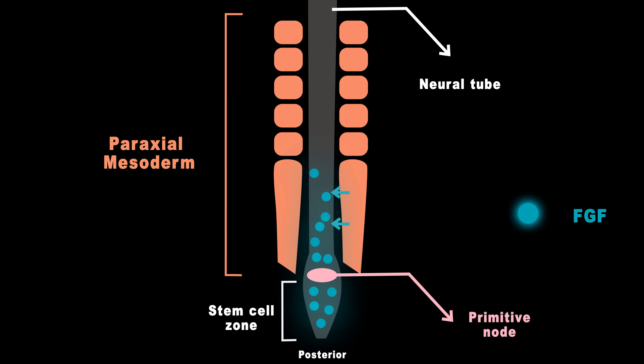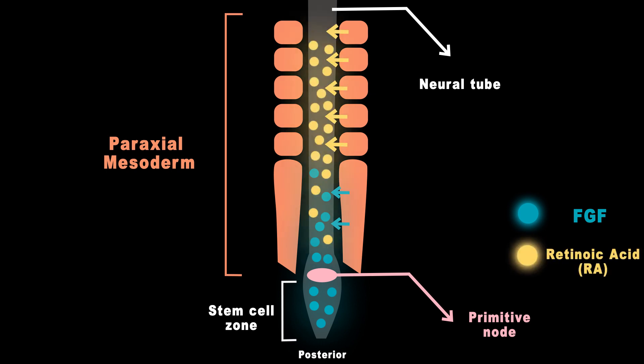This specific mesoderm layer is known as the paraxial mesoderm, which will be discussed in a future video. Moving towards the anterior axis, the paraxial mesoderm releases a different set of signals called retinoic acid, which is an active form of vitamin A. Retinoic acid inhibits the effect of FGF8 and triggers the differentiation of neural stem cells into neurons.